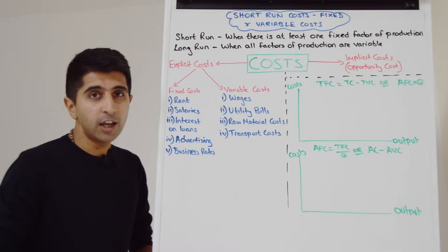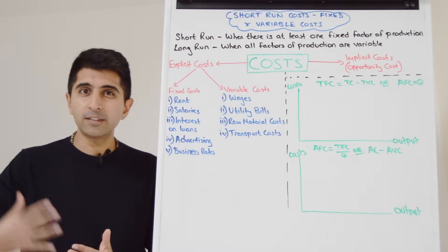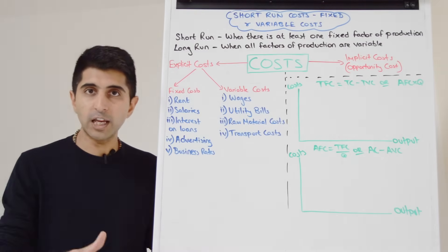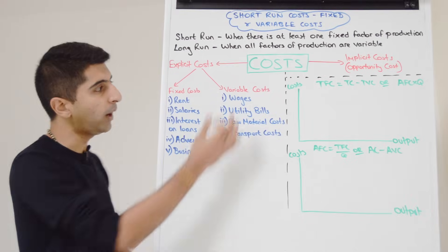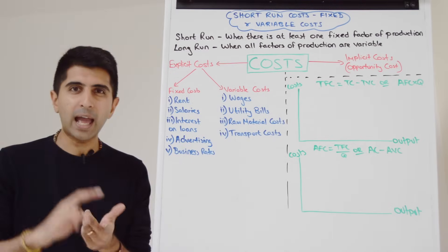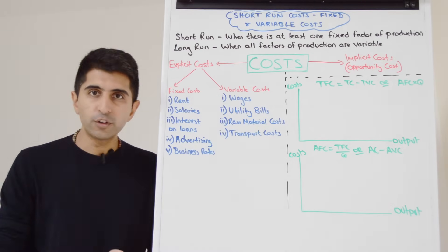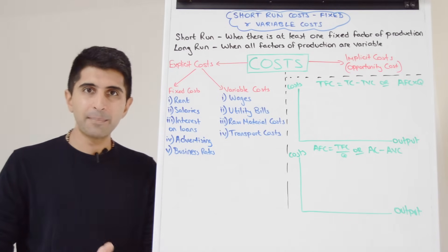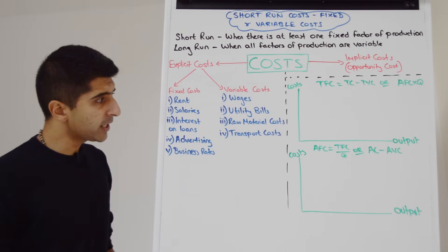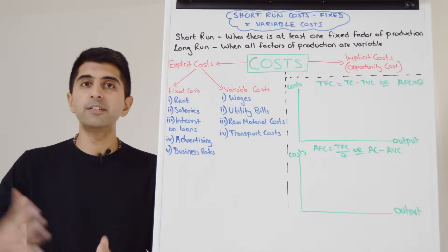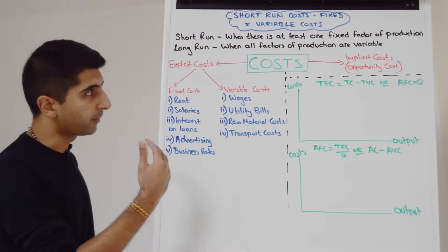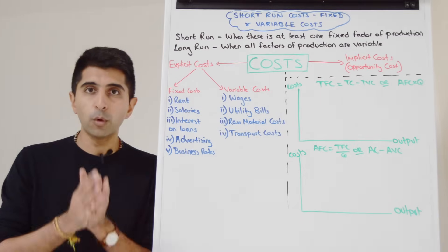Whereas variable costs — you have to pay more of these the more you're producing. Wages are more flexible than salaries and can change more quickly, so wages are a variable cost. Utility bills — gas, electricity, water, internet — are all variable. Your raw material costs and transport costs will all increase the more that you produce. So these are variable, whereas the previous examples are fixed costs.